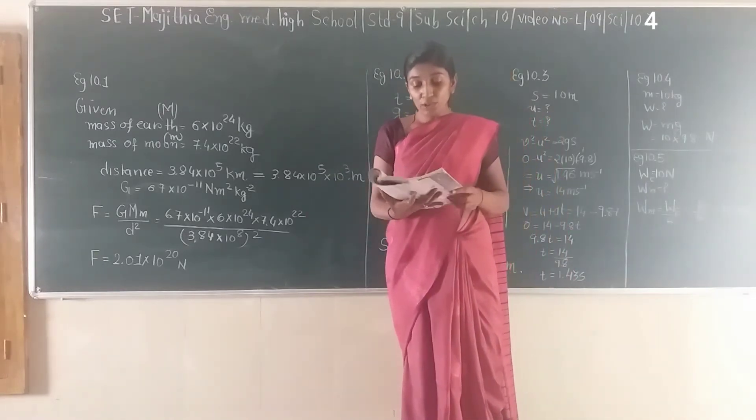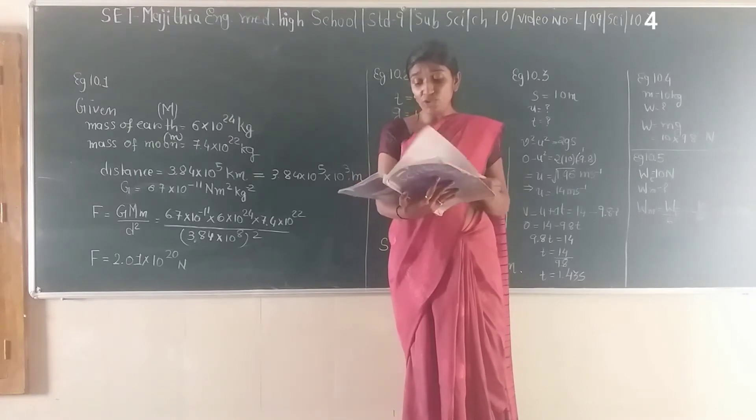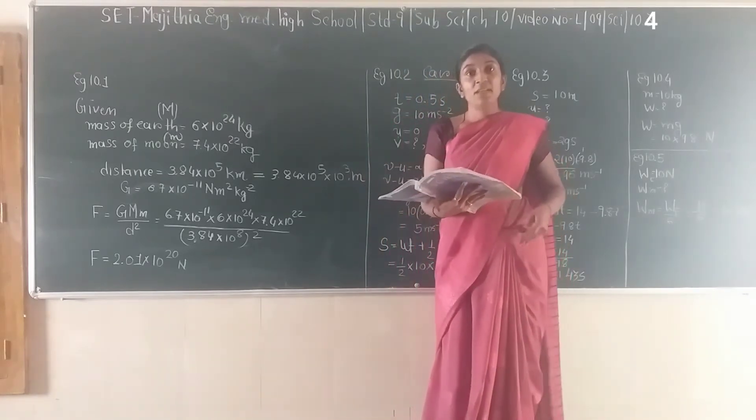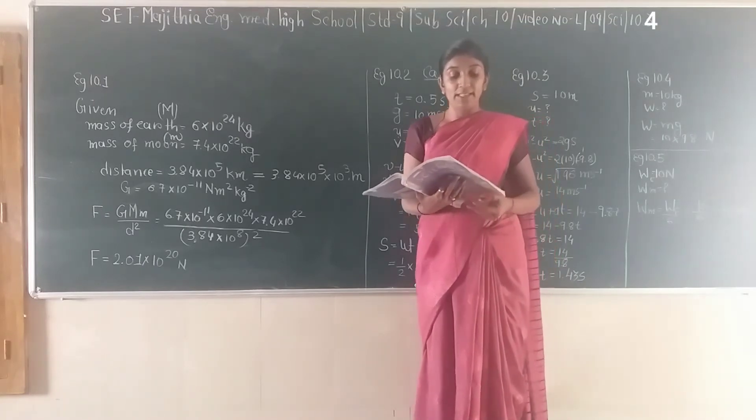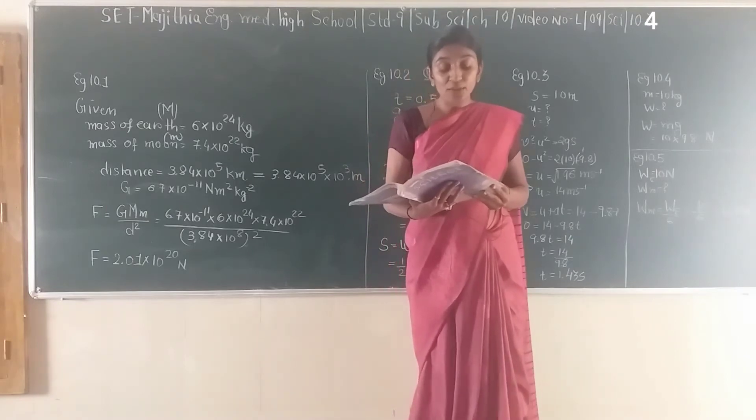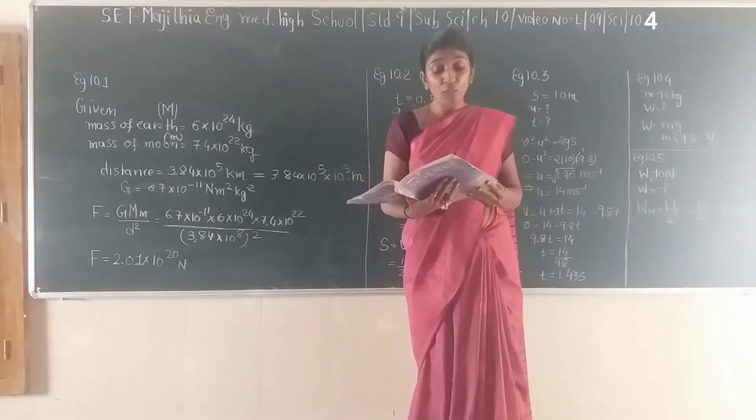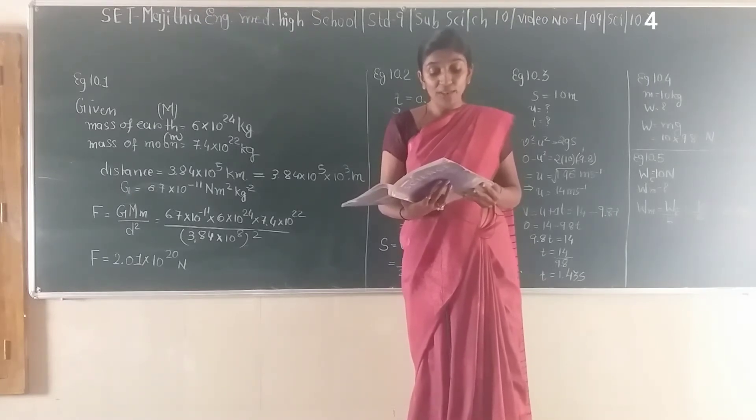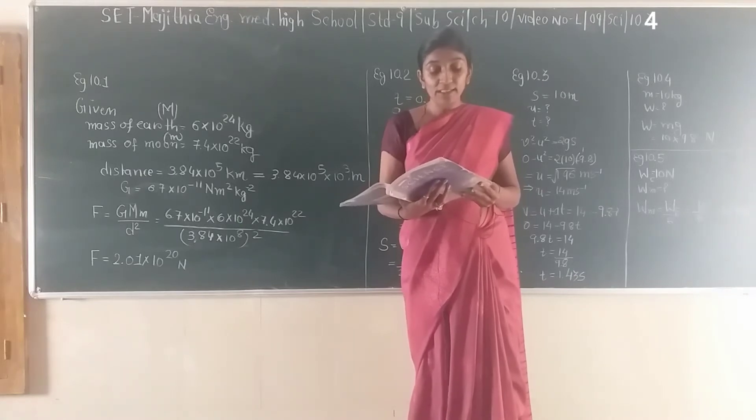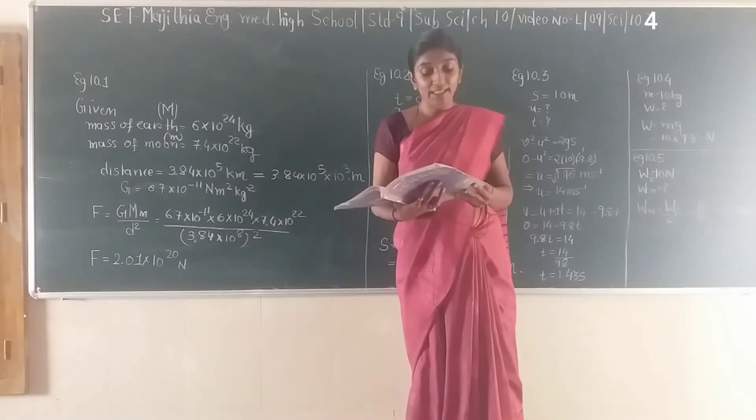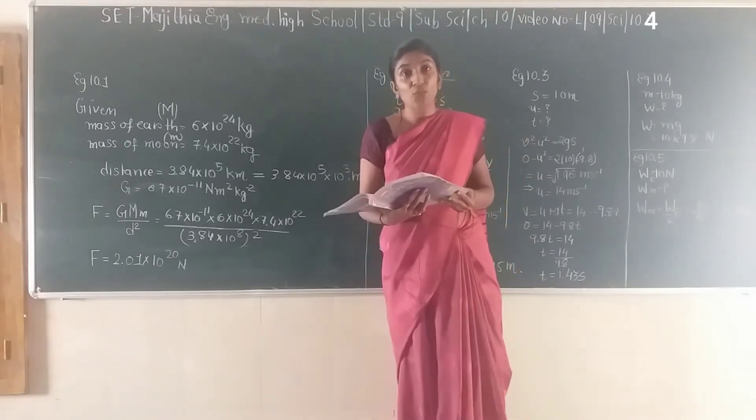Next is example number 10.2 on page number 136. A car falls off a ledge and drops to the ground in 0.5 seconds. Let g = 10 m/s². What is its speed on striking the ground? What is its average speed during 0.5 seconds? How high is the ledge from the ground?